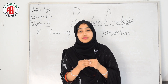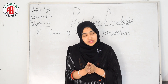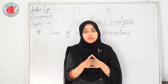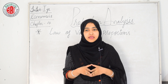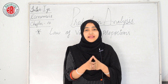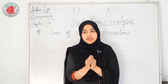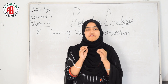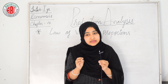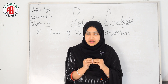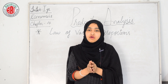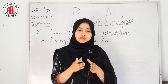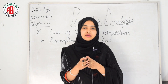The law of variable proportions was developed by 19th century economists David Ricardo and Alfred Marshall, and was later further developed by Stigler, F.B.M., and Paul A. Samuelson. The law states that when an increasing number of units of a variable factor is applied to fixed factors, total output first increases at an increasing rate, then at a diminishing rate, and ultimately decreases. The law is also known as the law of diminishing returns. There are certain assumptions underlying this law.